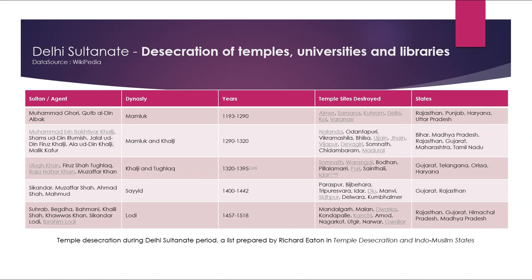Temple desecration during the Delhi Sultanate period — a list prepared by Richard Eaton in 'Temple Desecration and Indo-Muslim States.' During the Mamluk dynasty (1193–1290), Sultan Muhammad Ghori and Qutb-ud-Din Aibak destroyed temples at Ajmer, Samanah, Kohram, Delhi, Kol, and Varanasi — in the states of Rajasthan, Punjab, Haryana, and Uttar Pradesh. During the Mamluk and Khalji dynasties (1290–1320), Sultans including Muhammad bin Bakhtiyar Khilji, Shamsuddin Iltutmish, Dilaluddin Firoz Khilji, Alauddin Khilji, and Malik Kafur destroyed temples at Nalanda, Udantapuri, Vikramashila, Bhilsa, Ujjain, Jain sites, Vijjapur, Devgiri, Somnath, Dambaram, and Madurai — in Bihar, Madhya Pradesh, Gujarat, Maharashtra, and Tamil Nadu.